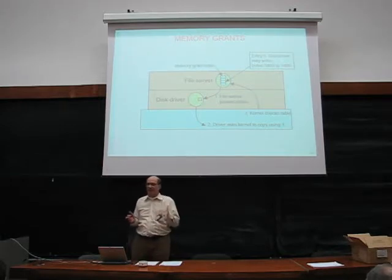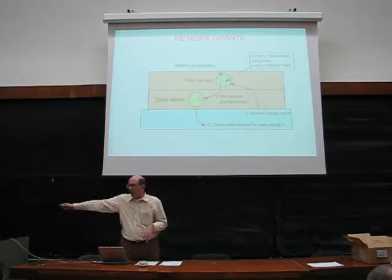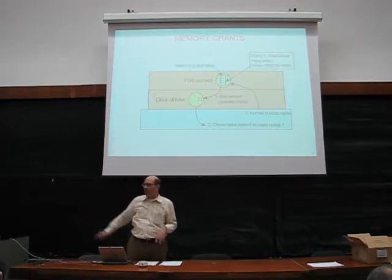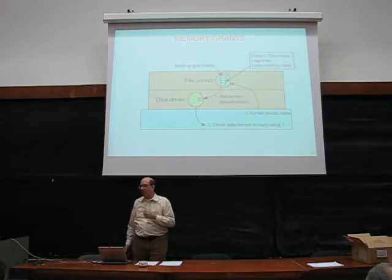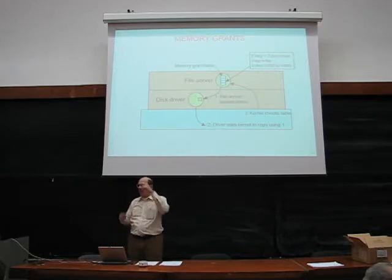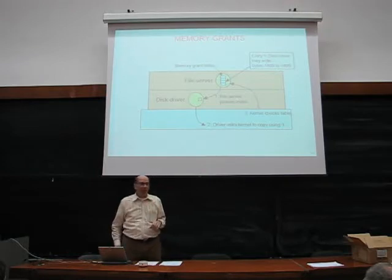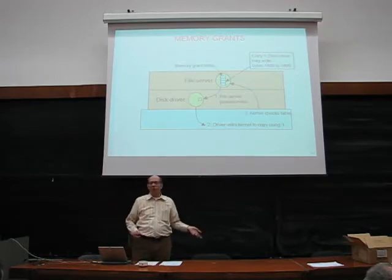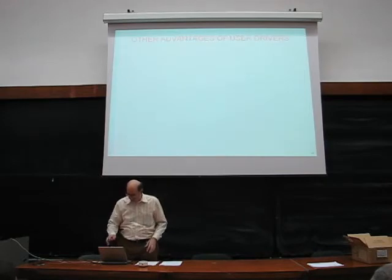As soon as the file server has got its data and started again, the first thing it does is erase the memory grant — write zeros on it. So even if the driver tried, it can't use it a second time. It's good for one specific process, one specific buffer, one time. It's very, very limited compared to the usual scheme where a driver can write anywhere in memory whenever it wants.